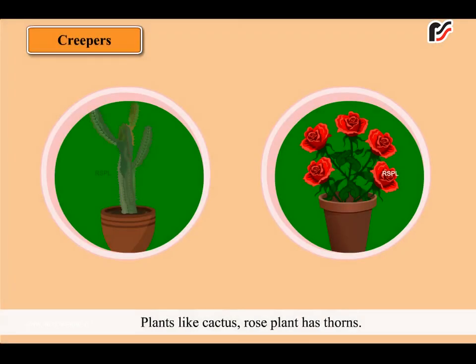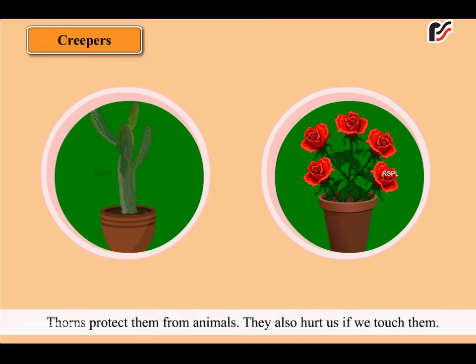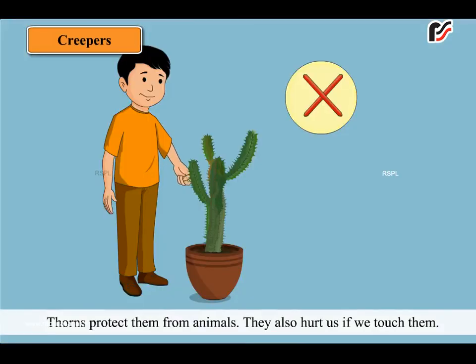Plants like cactus and rose plant have thorns. Thorns protect them from animals. They also hurt us if we touch them.